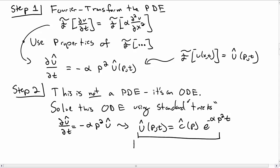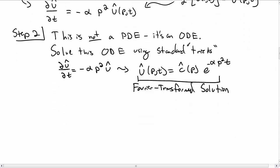So this is in some sense the solution, but it's actually the Fourier transformed general solution. And we know it's a general solution because it still has an arbitrary constant c hat.